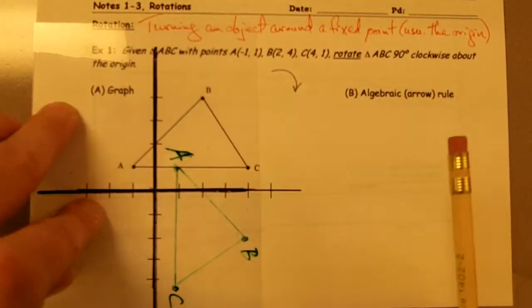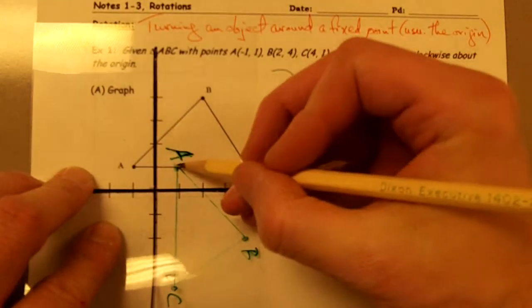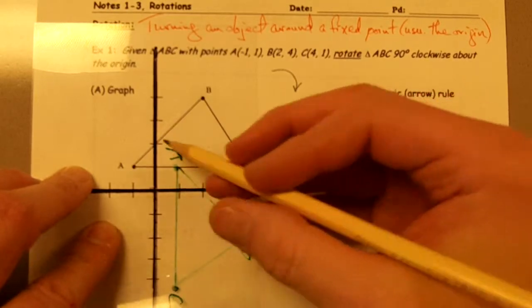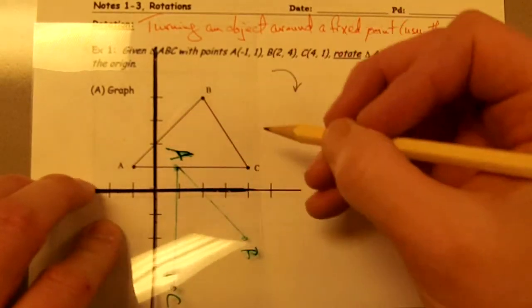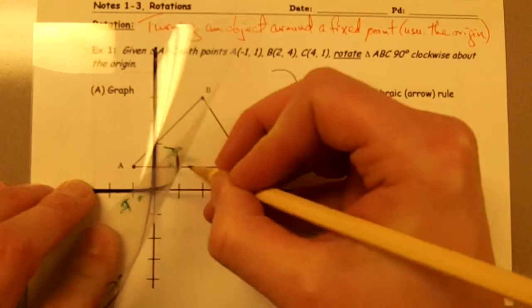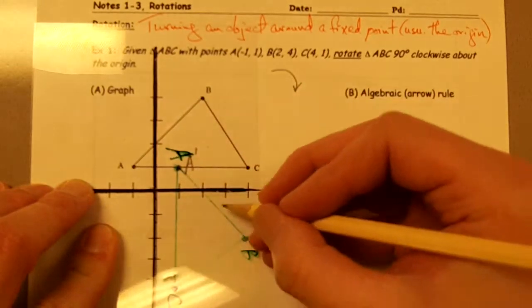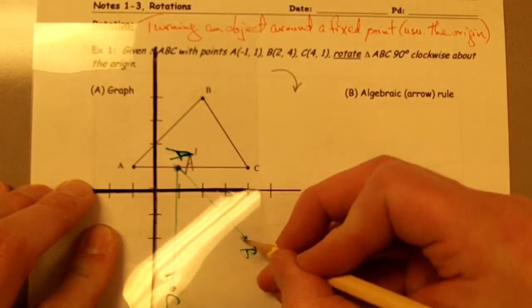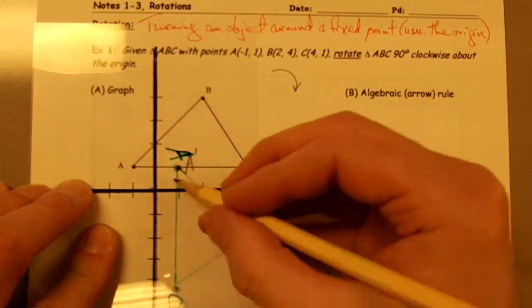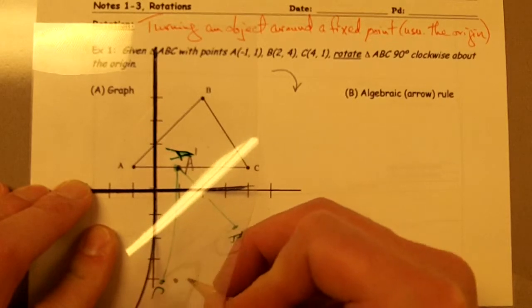What I want to do is peel up my transparency while holding it down with one hand, and I want to draw these points on here. I want to plot points A, B, and C, these rotated points, on my paper. So point A, I'm going to call this A prime because that's my rotated point A. Point B becomes B prime, that's this point right here. And point C becomes C prime, that's this point right here.